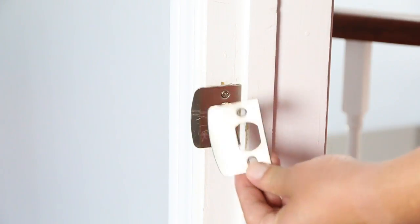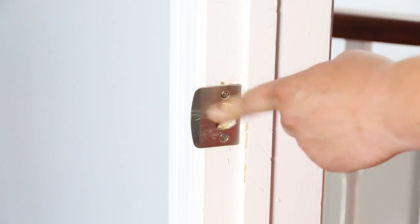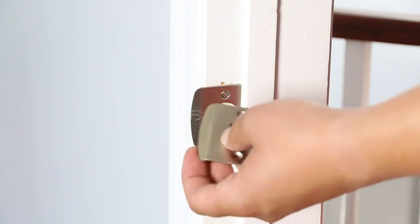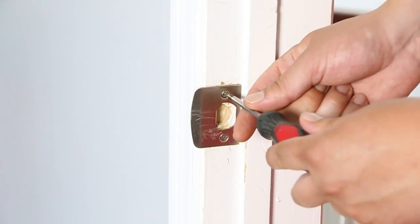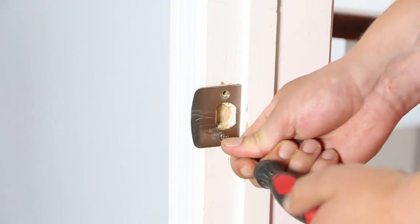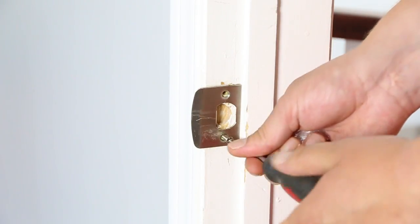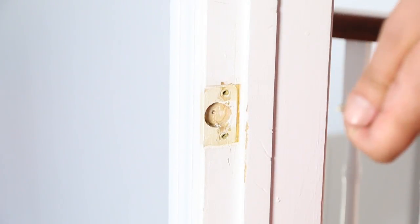So also in our set of handles you get the brand new strike plate. As you can see, the old one is scratched up, sometimes they get painted over. So to replace it, it's usually held on by two screws. So you just remove them.